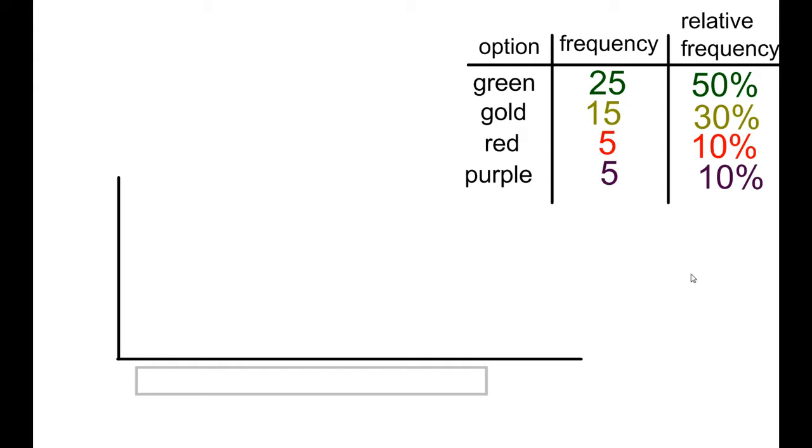Between green, gold, red and purple. Here we have the frequency and the relative frequency. Now a bar graph, you're simply going to create bars that represent each of the options. So the first thing that we're going to want to do is go ahead and create our scale on the left.